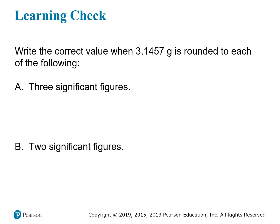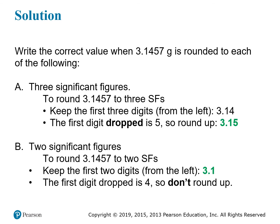Now try pausing the video and doing a couple of examples on your own before we look at the solutions. We want to round the number 3.1457 to 3 and then 2 significant figures. For 3 significant figures, we keep 3 digits from the left: 3.14. Then we see that the first digit we're dropping is 5, so that tells us we need to round 3.14 up to 3.15. For 2 significant figures, we keep the 3.1, and the next digit is a 4, which means we can round down by just dropping them and keeping 3.1.